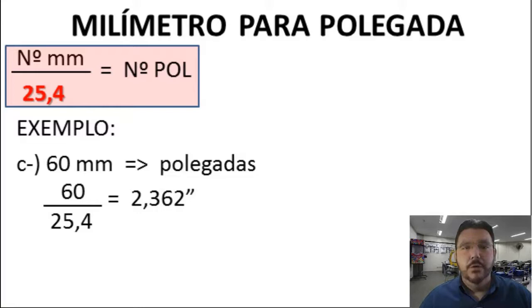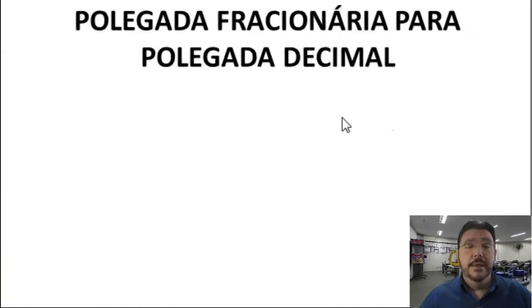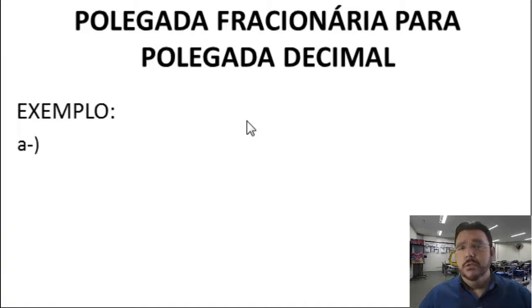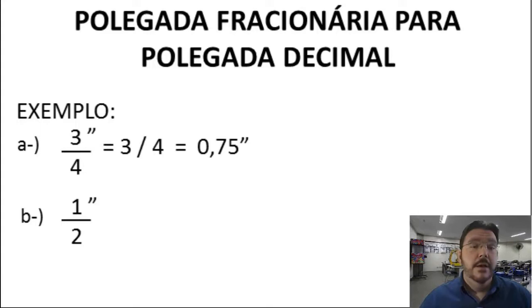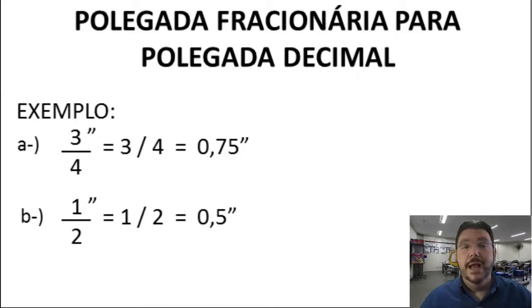Também podemos passar de polegada fracionária para polegada decimal: basta fazer a divisão do numerador pelo denominador. Por exemplo, 3/4 de polegada: 3 ÷ 4 = 0,75". Ou 1/2 polegada: 1 ÷ 2 = 0,5". Assim você consegue trabalhar tanto com a forma fracionária quanto com a forma decimal da polegada.